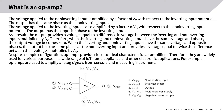When the inverting and non-inverting inputs have the same voltage in opposite phases, the output has the same phase as the non-inverting input and provides a voltage equal to twice the difference between their voltages multiplied by AV. Despite a simple configuration, op amps provide close to ideal characteristics as amplifiers. Therefore, they are widely used for various purposes in IoT, home appliance, and other electronic applications. For example, op amps are used to amplify analog signals from sensors and measuring instruments.